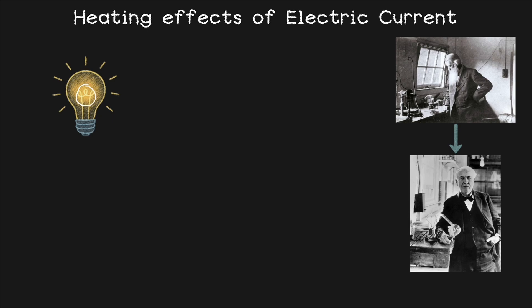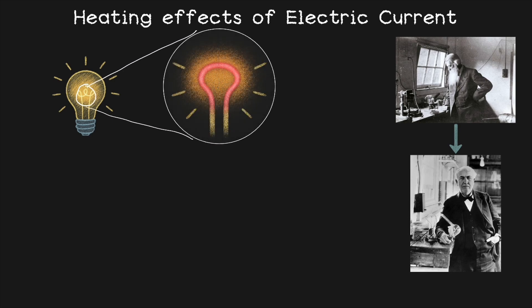If you really zoom in on this light bulb, you will observe that the bulb doesn't glow because of the electricity shining inside it. It glows because the filament gets super hot when electric current flows through it.